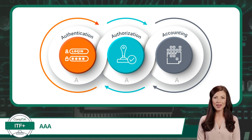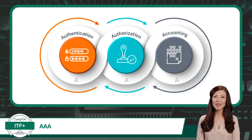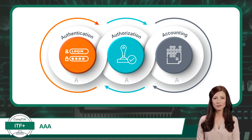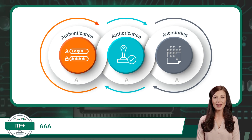AAA, as a user-centric approach to security, ensures that the right individuals have the right access at the right times. On the other hand, CIA is data-centric. It ensures that data remains private, accurate, and is accessible when needed. In essence, while AAA focuses on verifying and managing user identities and their actions, CIA is dedicated to safeguarding the data itself.